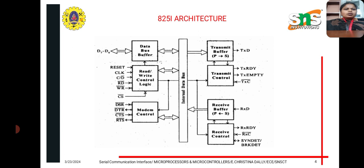This is the block diagram of the 8251. It consists of five blocks: data bus buffer, read/write control logic, modem control, transmitter section, and receiver section. All blocks are connected to the internal data bus D0 to D7.